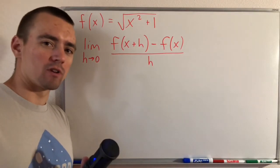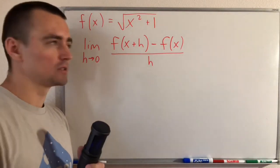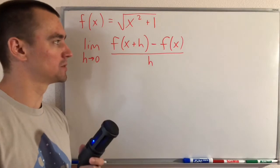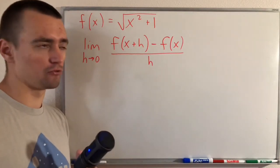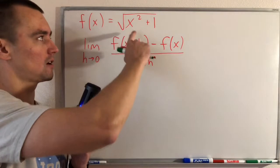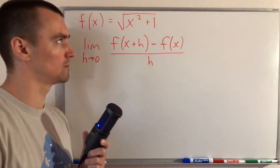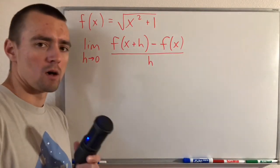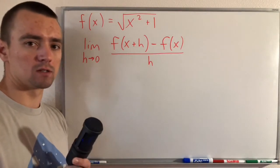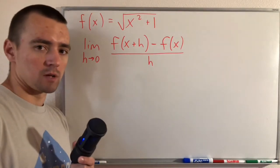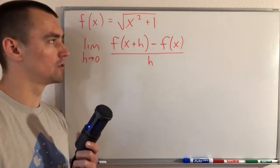Hey guys, Jake here coming at you with another math lesson. Today we're basically going to be using the definition of a derivative to find the derivative of the function f(x) = √(x² + 1). I wanted to show you this question in particular because it can be challenging sometimes to use the definition of a derivative to find the derivative of a function that includes square roots.